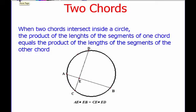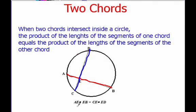When two chords intersect inside a circle, the product of the lengths of the segments of one chord equals the product of the lengths of the segments of the other chord. Basically, if we look at this circle, I have line segment AB with segments AE and EB, and also segment CE and segment ED. If I multiply AE and EB, and I multiply CE and ED, I'll get the same answer. For example, if these are 2, 6, 3, and 4...